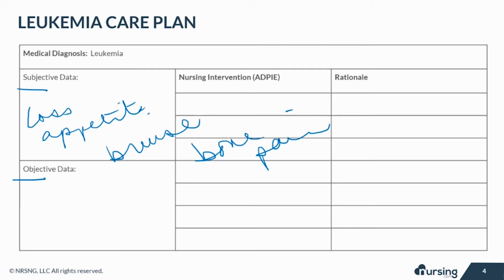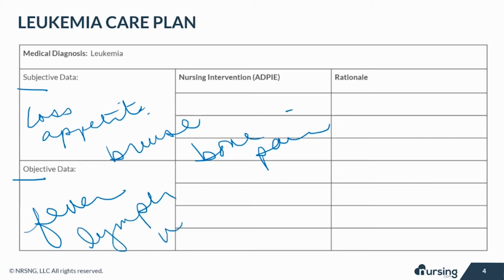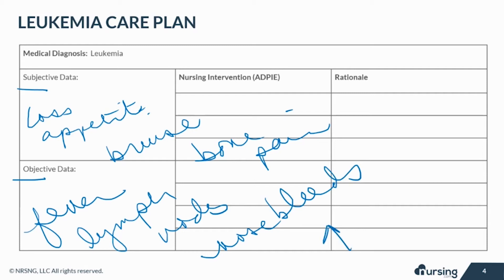Objective data may include frequent infections, fever, swollen lymph nodes, enlarged liver or spleen, petechiae, recurrent nosebleeds, prolonged clotting factors, elevated white blood cells, and pallor.